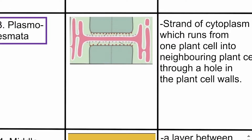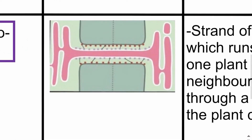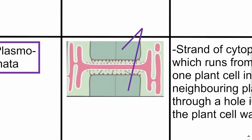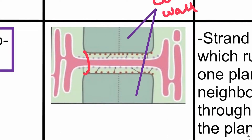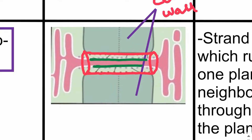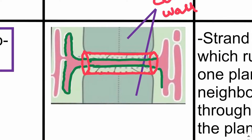We can see that there is a cell wall with a hole in it, and through this hole there is a strand of cytoplasm — a thin cytoplasm that runs through this hole. This thin strand of cytoplasm is known as the plasmodesma. Plasmodesmata is the plural term, and the singular is plasmodesma.